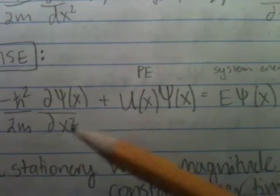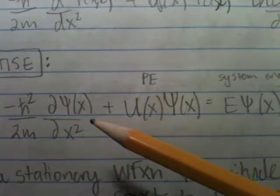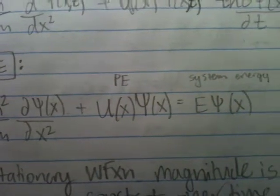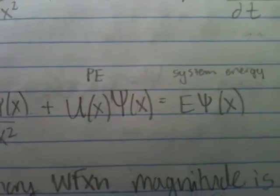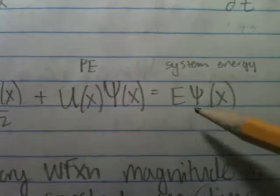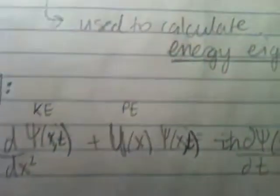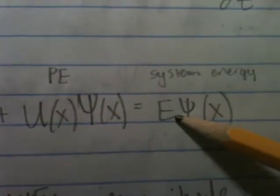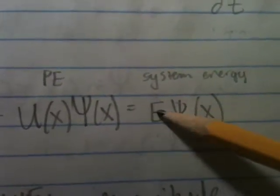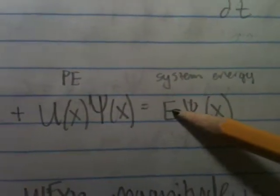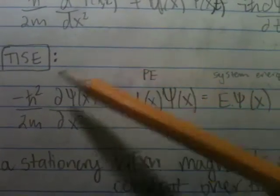Which, as you can see, there's no time. Yay! No time. This solves for the system's energy. Now, these words, eigenvalues. Energy here is going to be an eigenvalue of this eigenfunction.